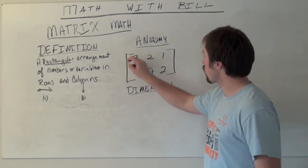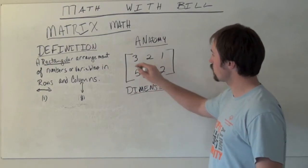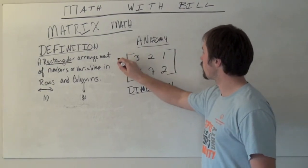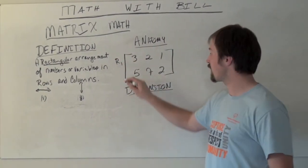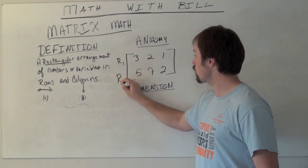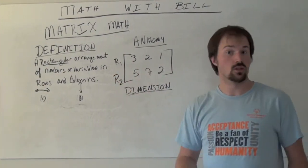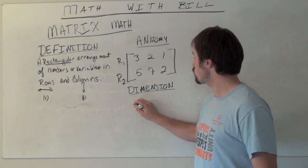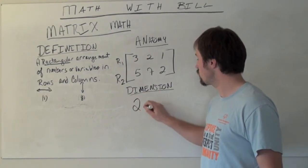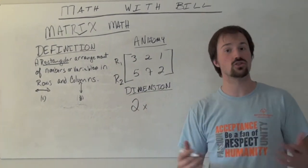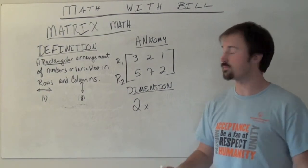Counting this up, going across first from the top down, we have row 1 and then a second row, which we'll call row 2. So that takes care of our two rows. So we're going to call this a 2 and then we put in a small x, 2 by, and now we need to name the number of columns.